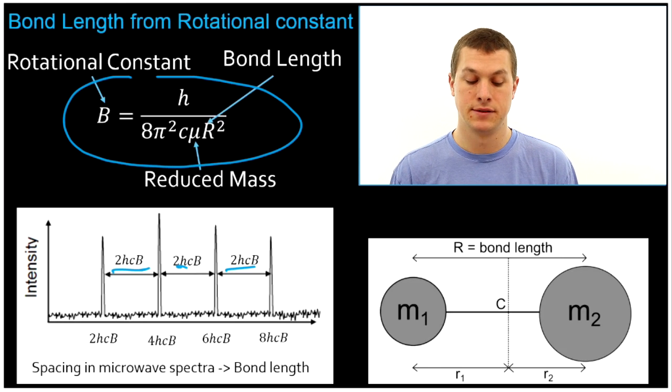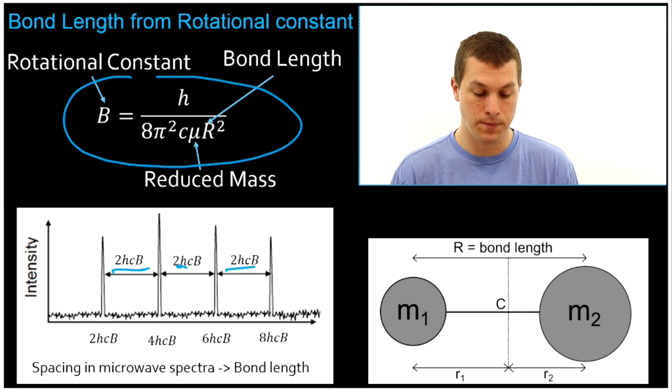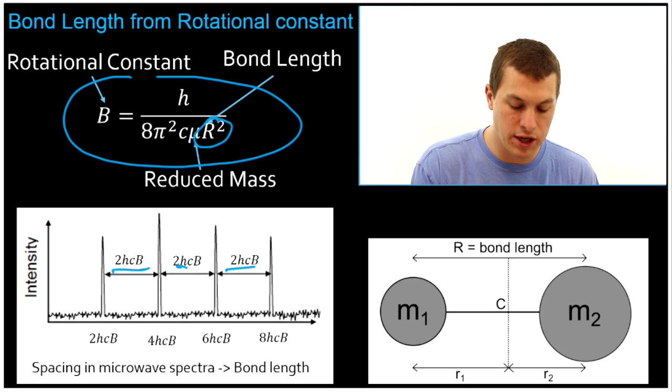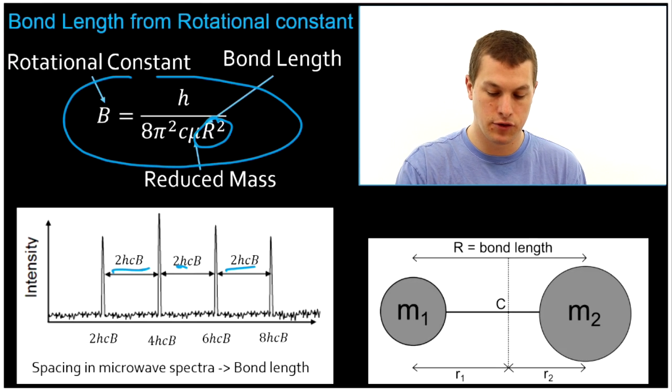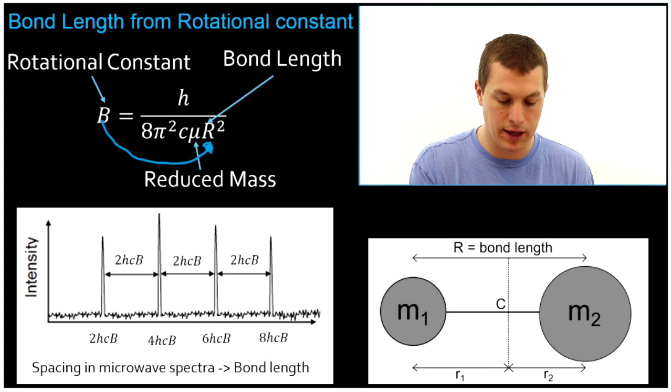And then this μ and r are the things that we want to focus on for now. μ is the reduced mass. And we'll take a look at how to calculate that in just a second. But it's just a math trick to take our two masses and treat them just as one. And this r is what we're really going to try to get out. It's the bond length. So our whole goal is going to be to start with our rotational constant and calculate r.